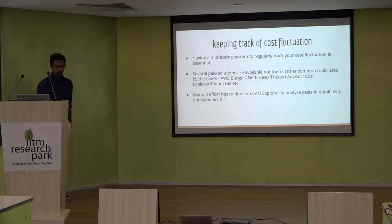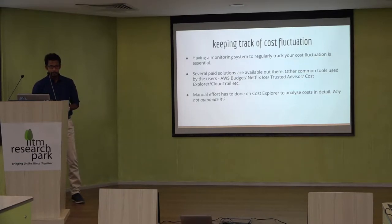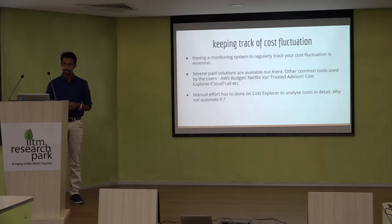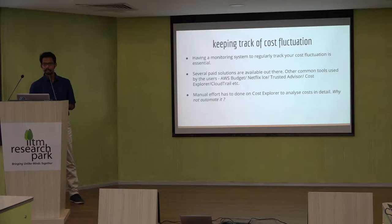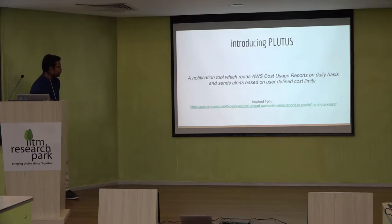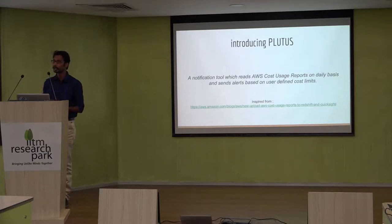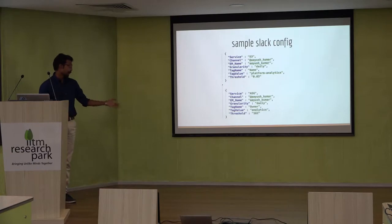Before building Plutus, we explored open source options. Netflix Ice was available but we wanted more customization for our application needs, so we didn't go with any available internet solution as none fit our requirements. Plutus is a notification tool which reads the AWS Cost and Usage Report on a daily basis and sends alerts based on defined threshold limits for particular resources. When a threshold is crossed, it immediately sends alerts to people in whatever form possible.